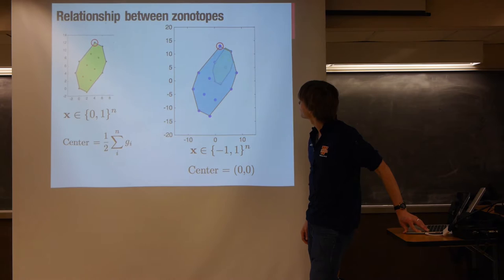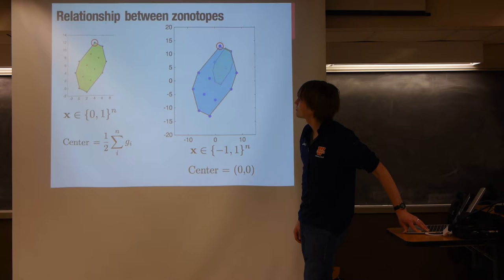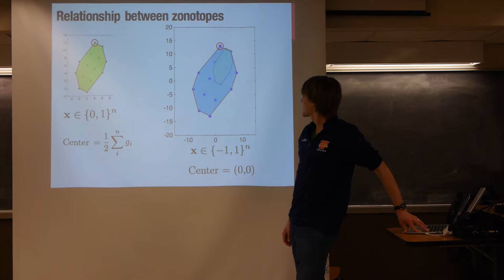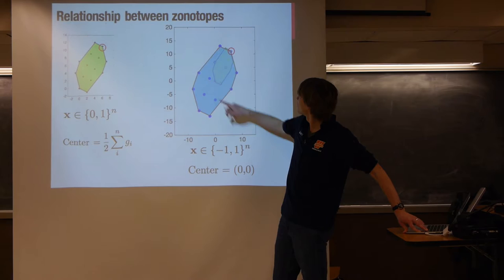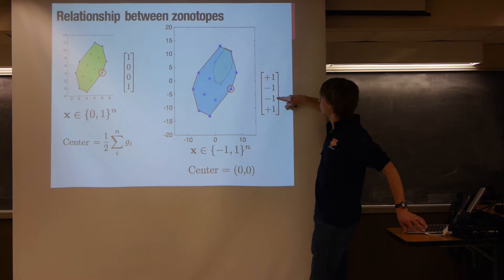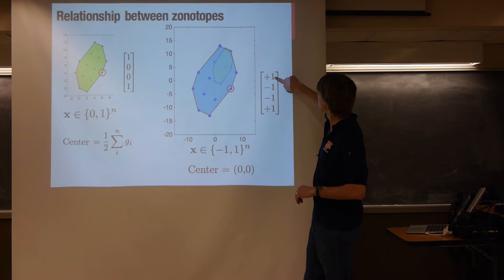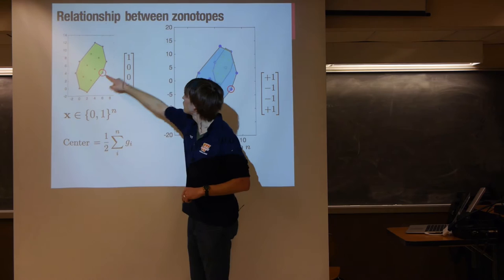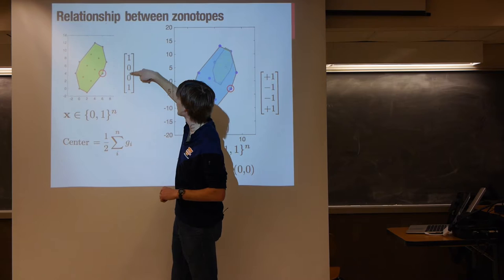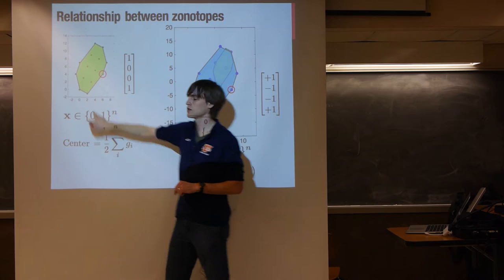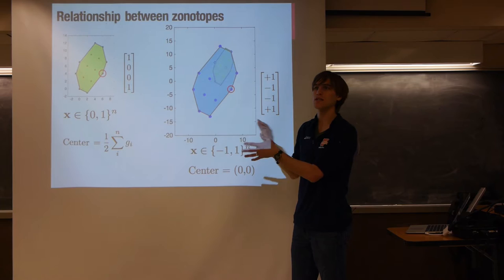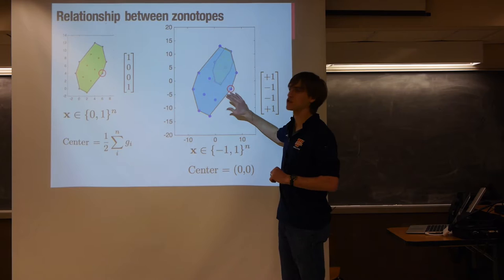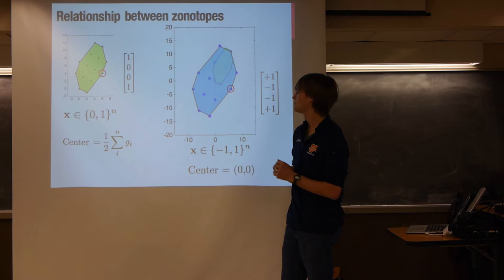An audience member asks why the center of the (-1,1) zonotope is (0,0). Because if the point (1,-1,-1,1) maps to a vertex, inputting (-1,1,1,-1) gives the mirror image — and the center of those two is (0,0). Whereas for the (0,1) zonotope, inputting (1,0,0,1) gives one vertex and (0,1,1,0) gives another, and their center is something else. To be convinced that one polytope is just a translation and scaling of the other, you just have to sit down and sketch out the algebra.